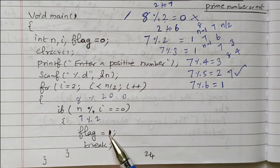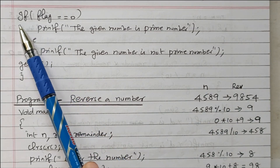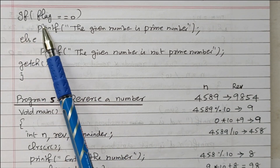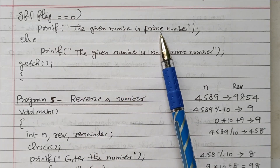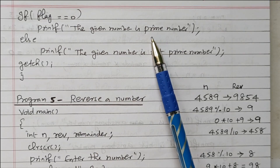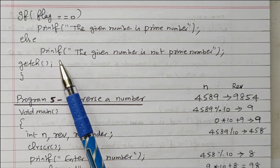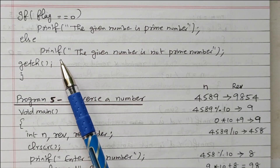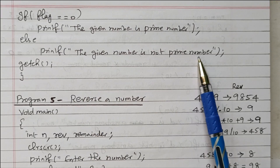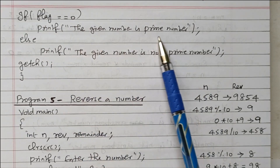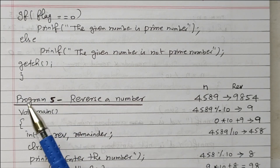After the for loop, we check the flag value with an if statement. If flag equals 0, the given number is a prime number. Else — if flag is 1 — that means some number exactly divided it, so the given number is not a prime number. Then we use getch and close the program.